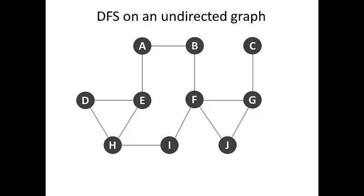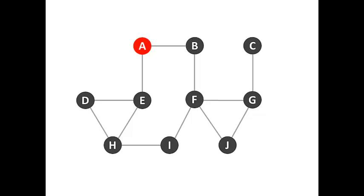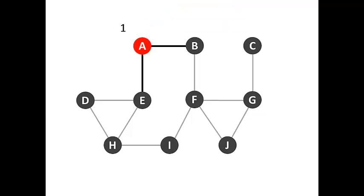We're going to apply Depth-First Search to this undirected graph. We'll start with vertex A — we select any vertex to be the source, and in this case we're going to choose vertex A. We're going to use red color to indicate a vertex that has been discovered. We look at A's edges to undiscovered vertices — we have B and E — and we're going to choose the one that comes first alphabetically, which is vertex B.